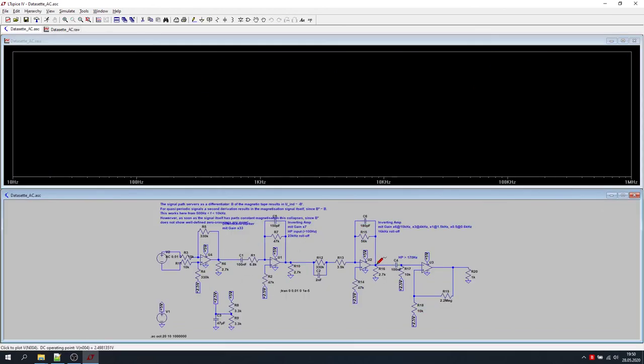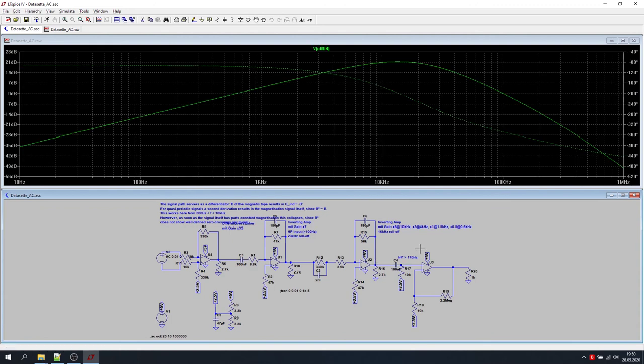So, what I can show you here is the frequency response after our differentiator. And as you can see, up to a frequency of five, six kilohertz, we have a linear ramp in gain. And that's exactly needed for a very clean differentiator circuit.